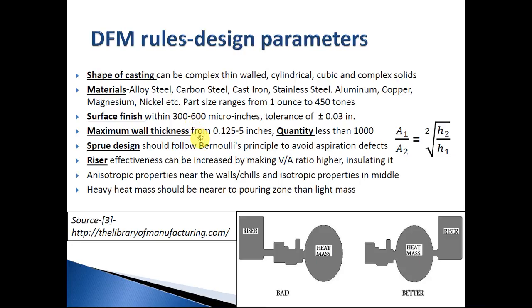The maximum wall thickness ranges from 0.125 to 5 inches, and quantities are normally less than 1000, indicating a low production rate. The sprue design must follow Bernoulli's principle: as the speed of molten metal increases when poured down through the basin, the cross-sectional area must decrease to avoid aspiration issues.